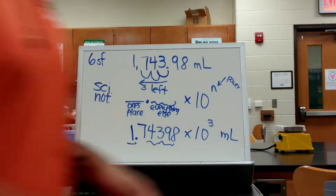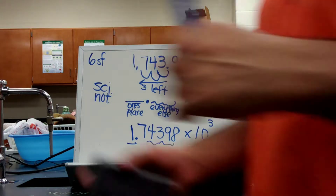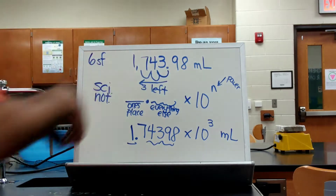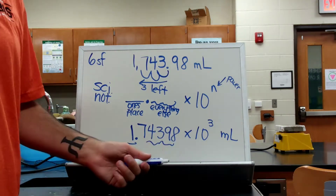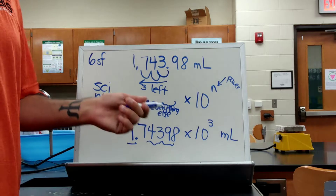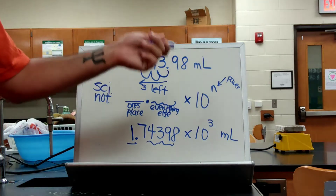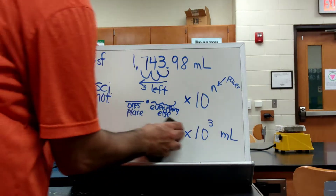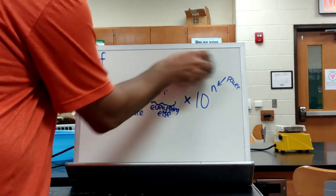Now, another way of thinking about this: I made my number smaller, right? I went from 1,743 and turned it into 1.74398. We want our numbers to have at least a ones place, and that's how I'm moving my decimal point — to get a ones place.